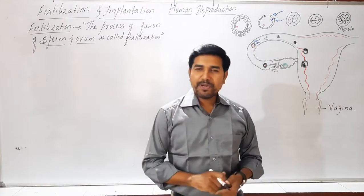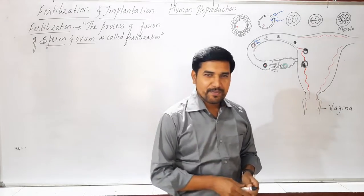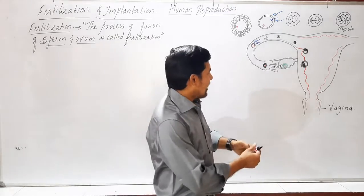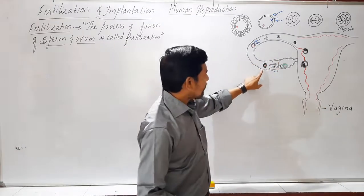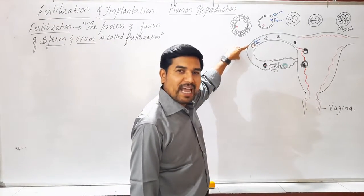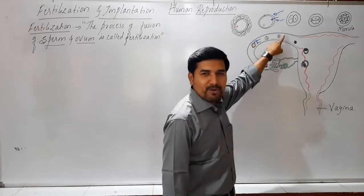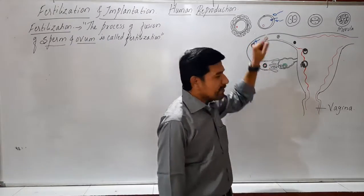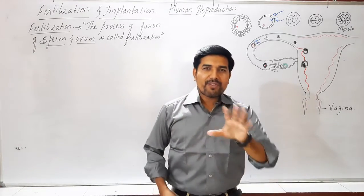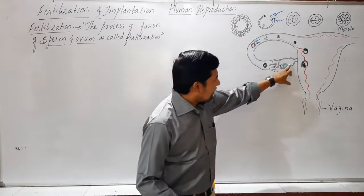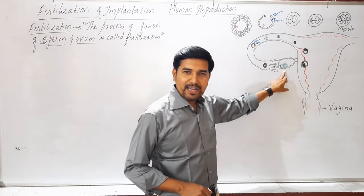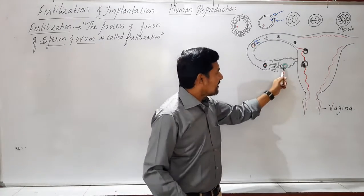The fallopian tube is divided into three parts. The first part is called the infundibulum, which consists of finger-like projections. The second part, also called the upper part, is called the ampulla. The last part is called the isthmus. These are the three parts of the oviduct or the fallopian tube. The ovary contains a matured follicle called the Graafian follicle, from which the ovum is released.